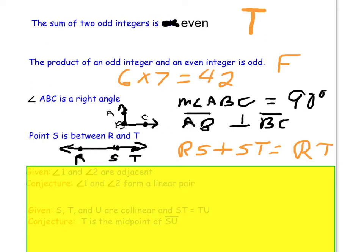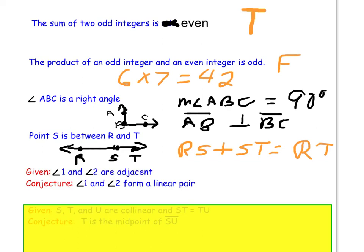Looking at the note sheet, our next set of instructions say determine whether each conjecture is true or false. If it's true, you're done. If it's false, you need to give a counterexample for the false conjecture. We have that angles 1 and 2 are adjacent, and the conjecture is that angle 1 and 2 form a linear pair. Is it true that if two angles are adjacent, they absolutely have to form a linear pair?